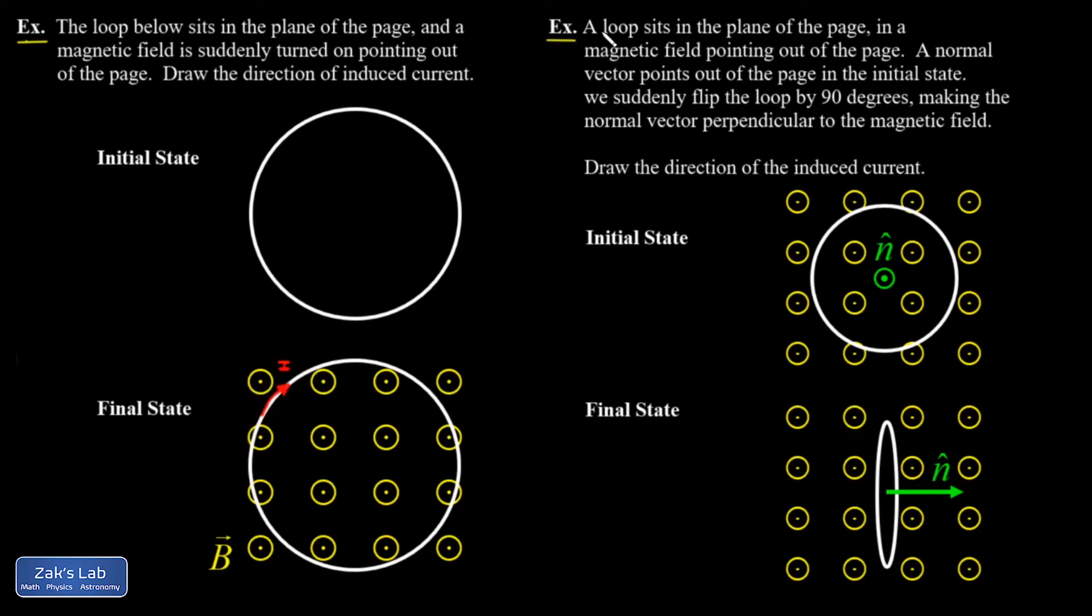In my second example, I have a loop sitting in the plane of the page, and it's experiencing an outward magnetic field. Now, just to keep track of the orientation of the loop, we're using a normal vector. So this is a vector perpendicular to the area captured by the loop. It's pointing out of the page as well. So I have a bunch of field lines poking out through the loop at this moment. Then I quickly rotate the loop by 90 degrees, making the normal vector perpendicular to the magnetic field. In other words, the face of the loop is now parallel with the magnetic field.